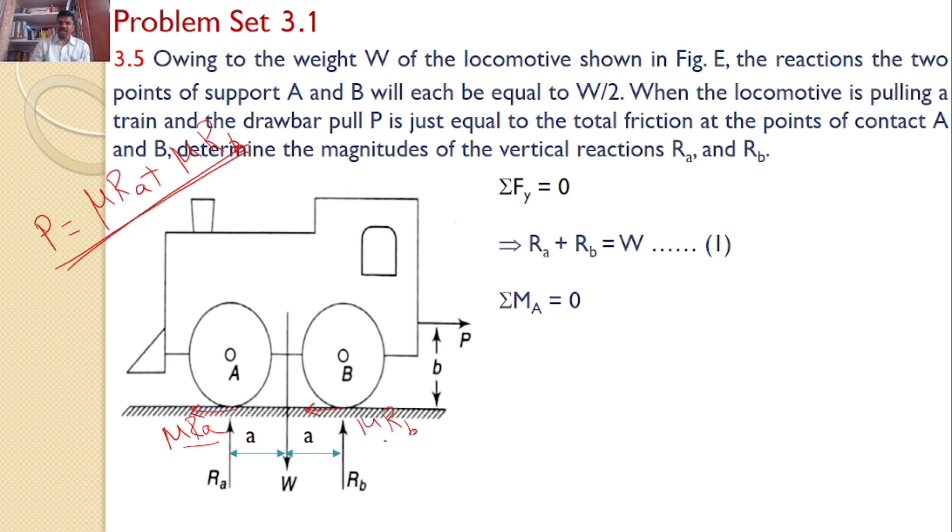Directly, I am going to take the next equilibrium equation, taking the moments about point A. Now, Ra is passing through this point and that will not introduce any moment. Now, there are another three forces: W, Rb and P.